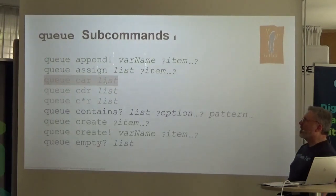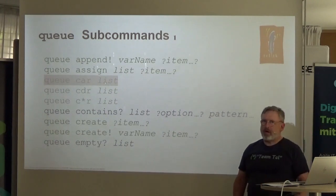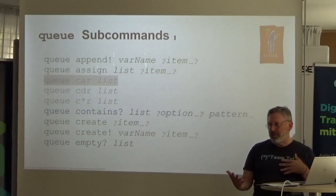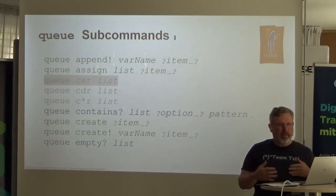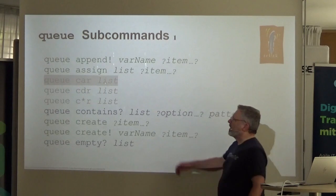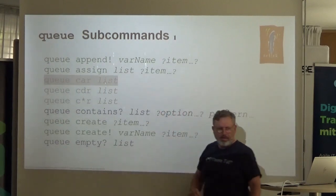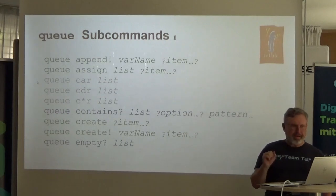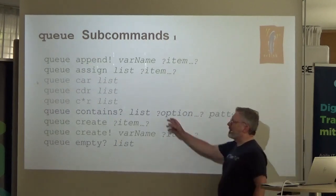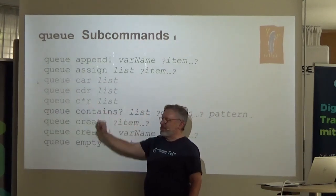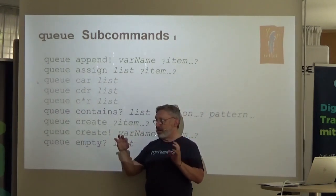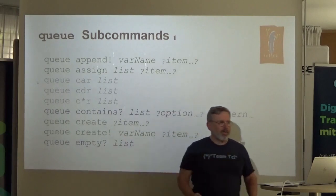This is an overview of what's in the Q ensemble. The green items are just wrappers around things that already exist — we already have append (Lappend) and assign (Lassign). Then there are some things I played with. There's one Lisp person in the audience: there's car, there's cdr, and there's all the other stuff in between — CAAR, CDADR, whatever you like.